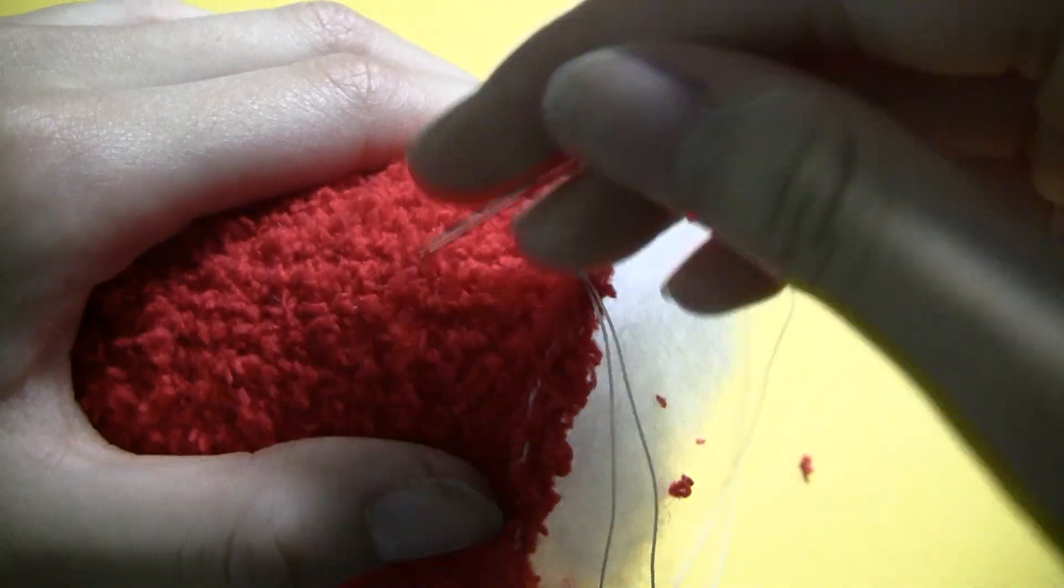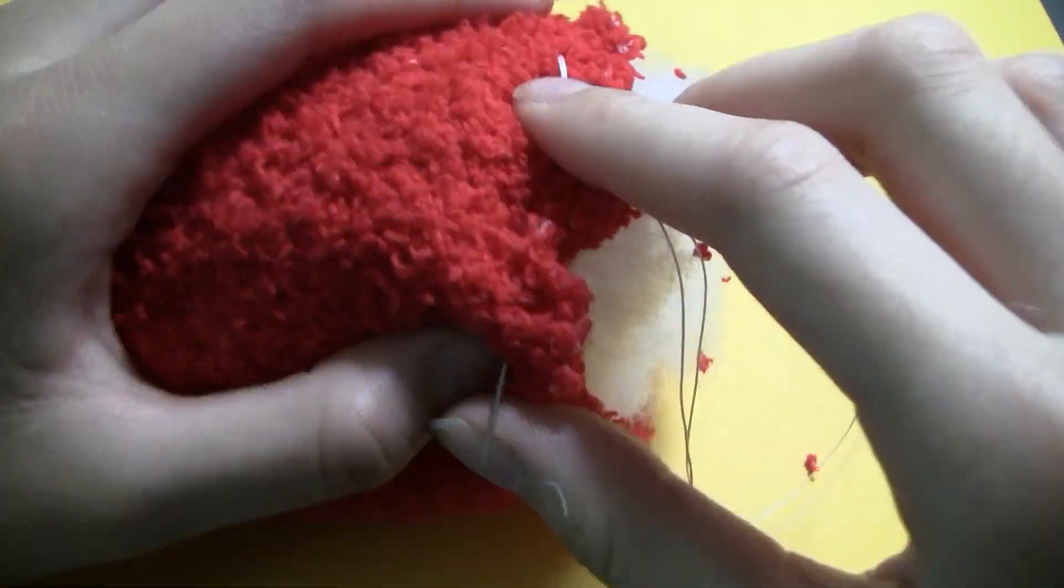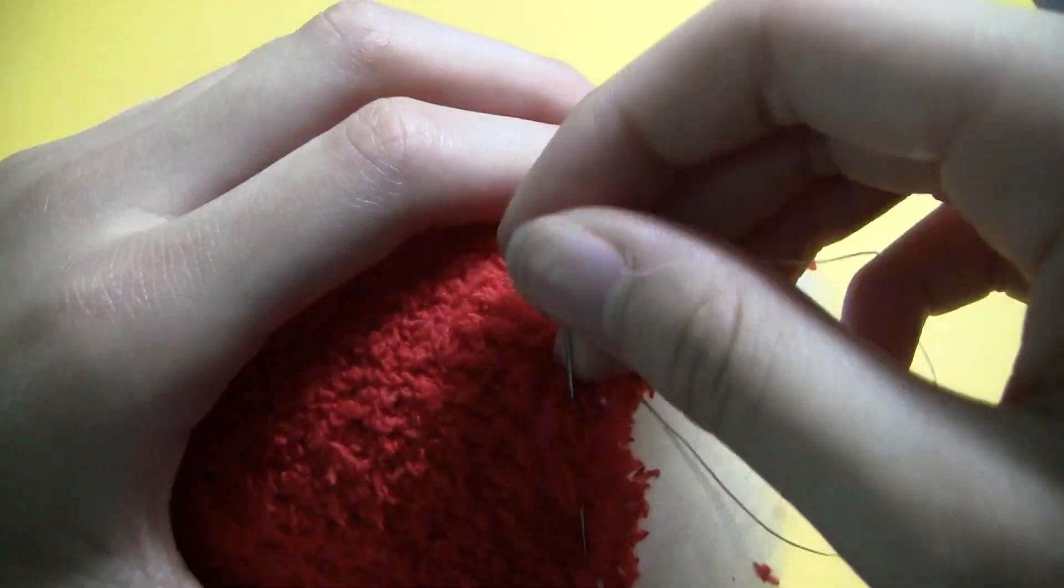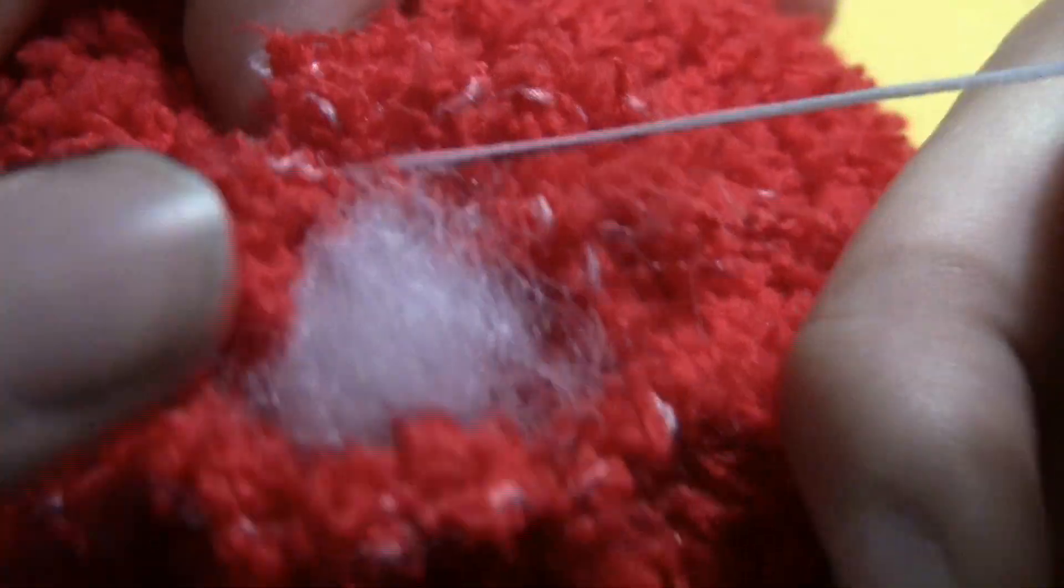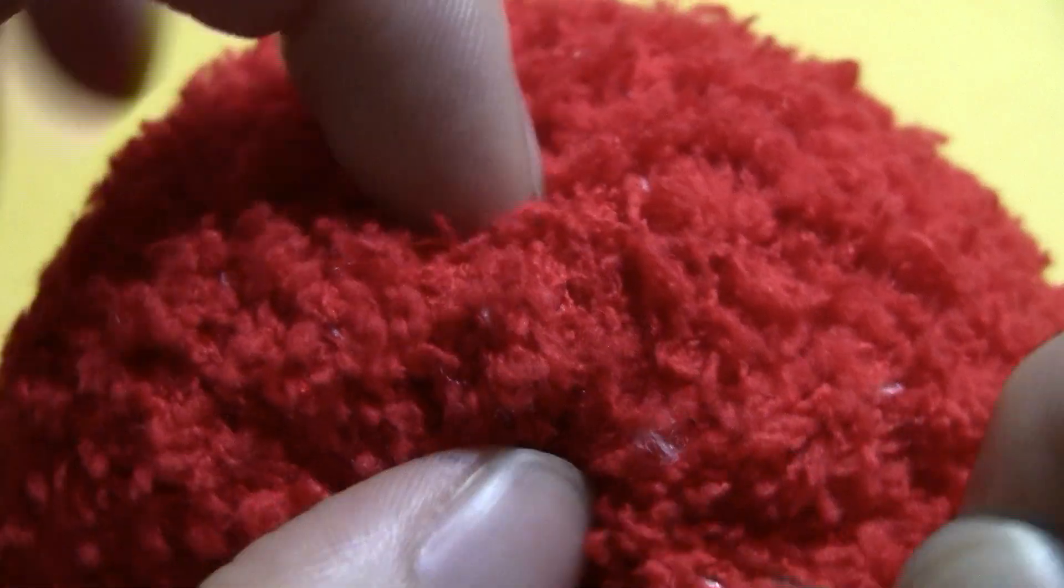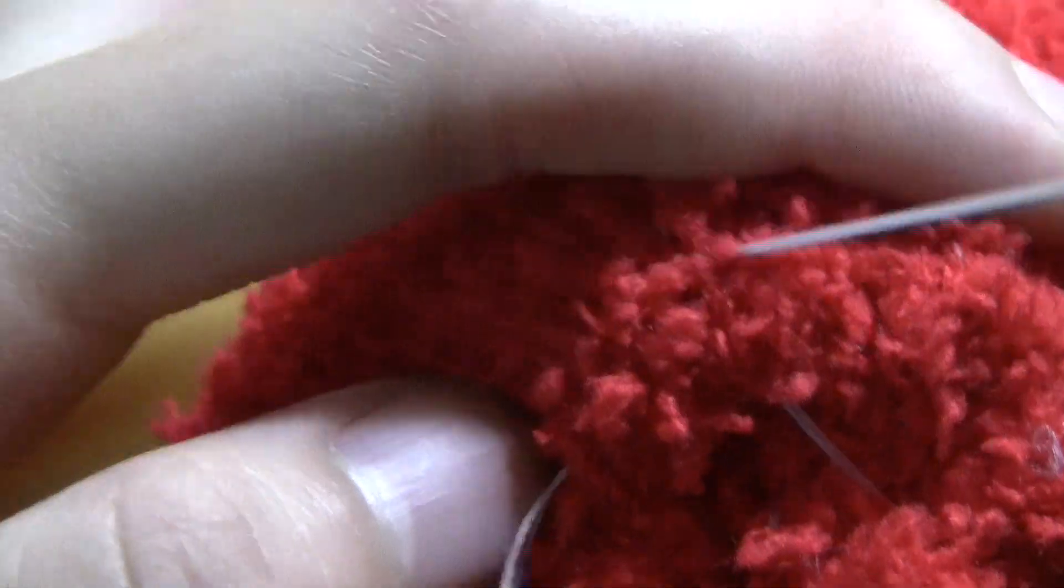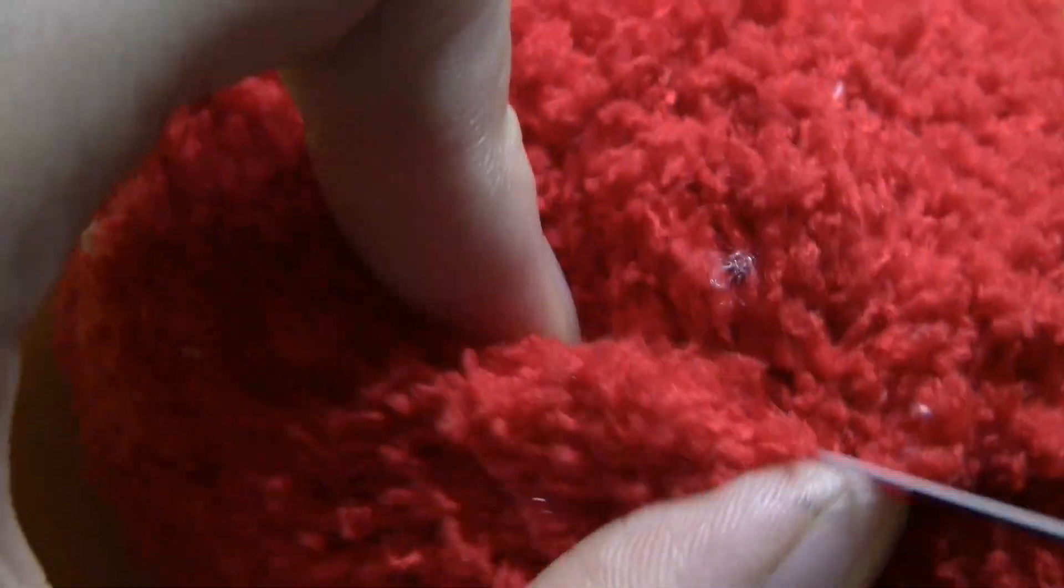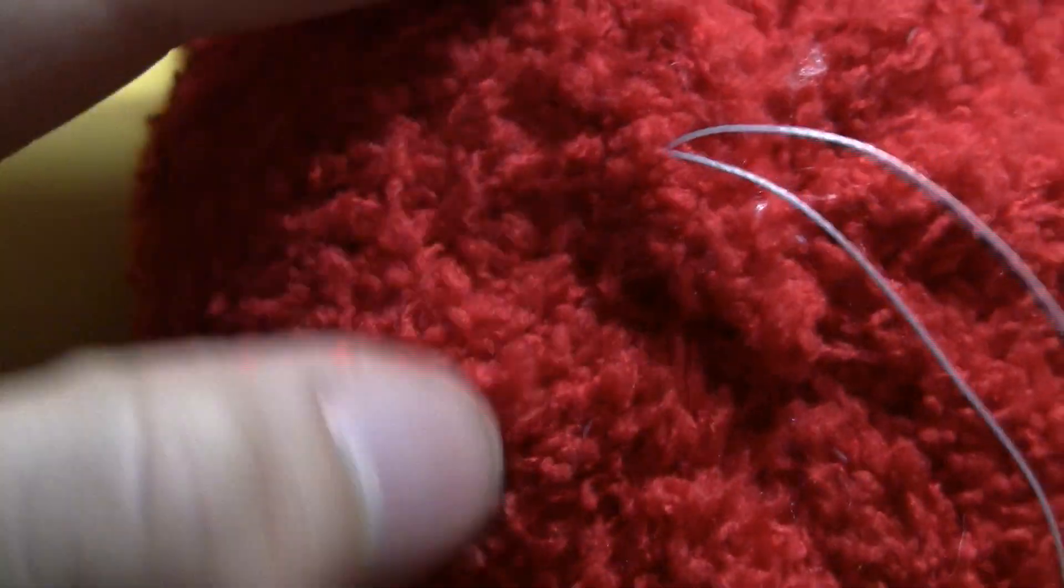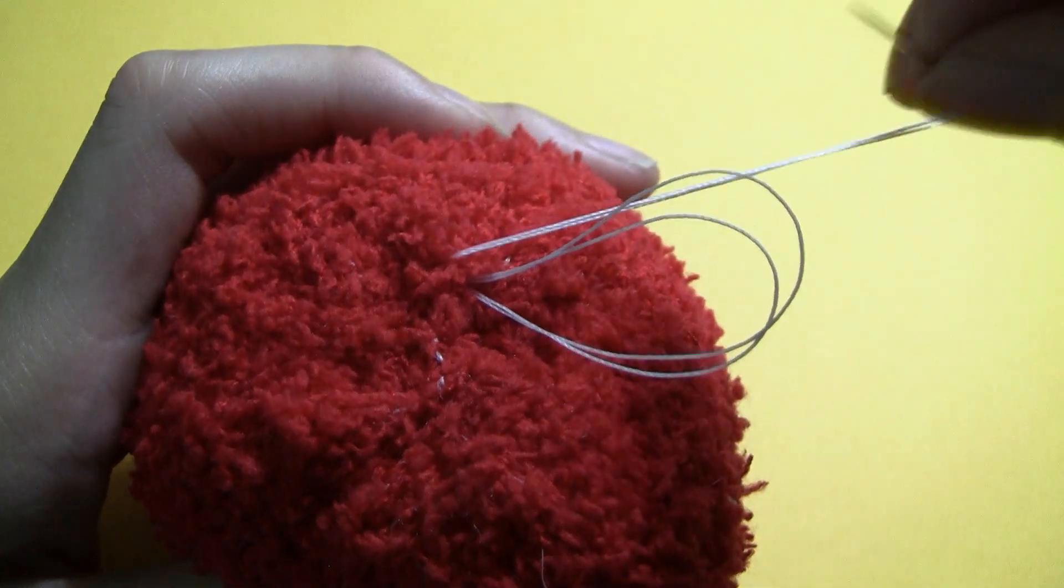Basically what you want to do is make a series of large stitches all around the opening and pull it closed like a drawstring bag. As you pull, stuff the raw edges into the plush and secure it with a couple of stitches. Tie a couple of slip knots and hide the end.